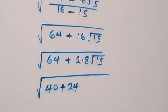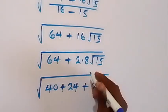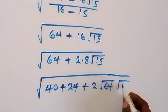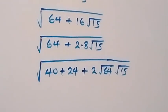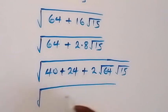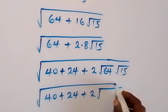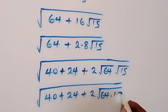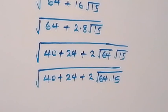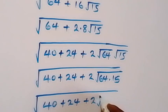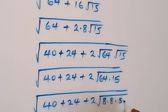We can rewrite this as square root of 40 plus 24, then plus 2 root 64 times 15, where root 64 times root 15 comes together. We can write 64 as 8 times 8 and 15 as 5 times 3.